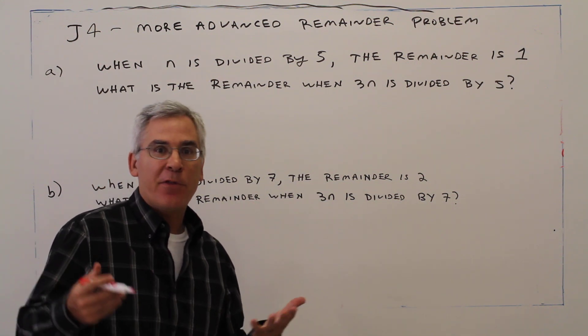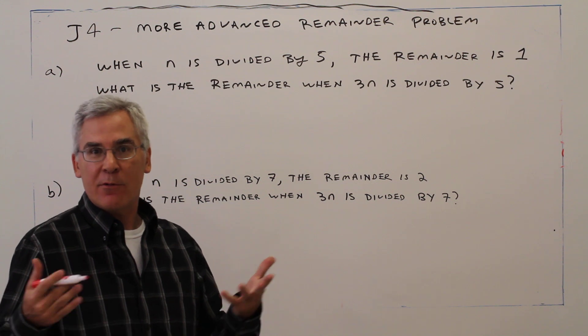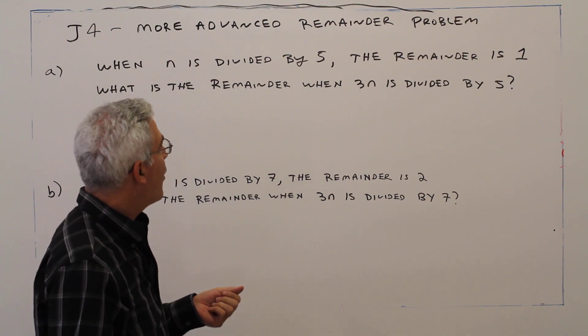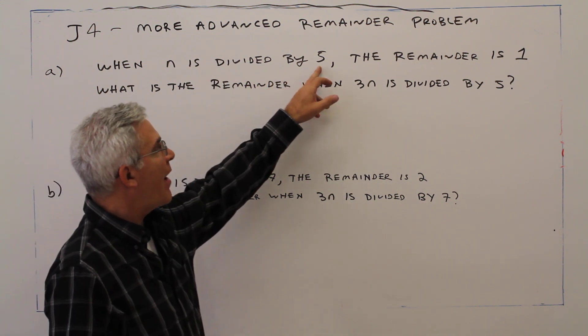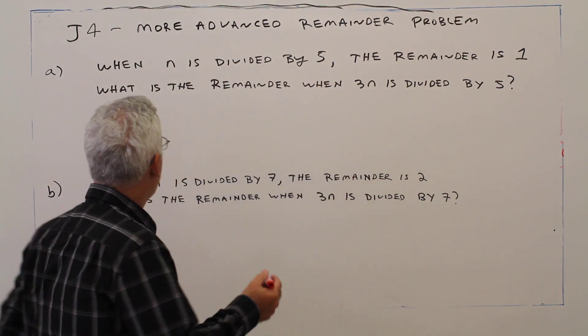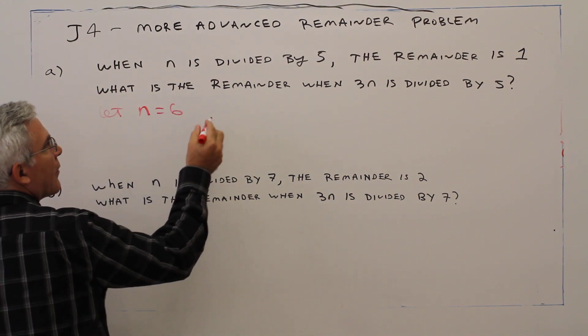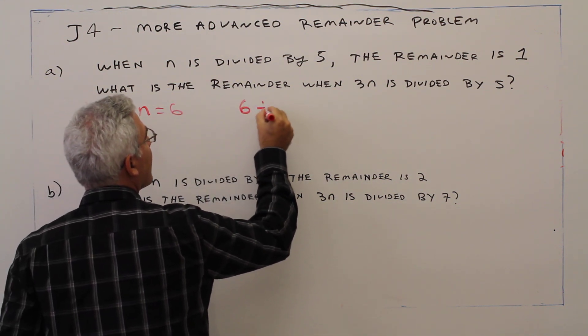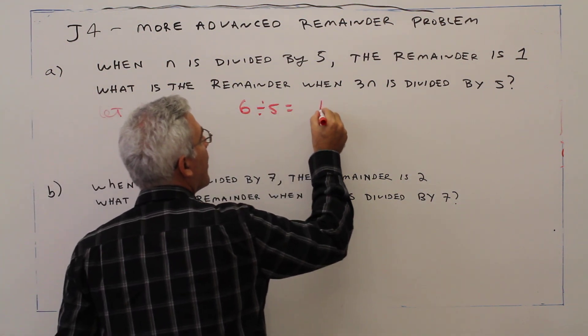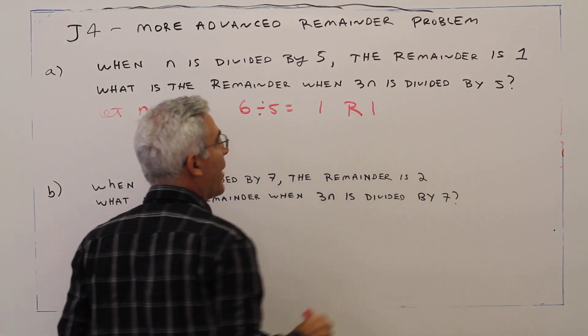So what I usually do for this is just look for some concrete numbers and see what's going on. So I know that 6 divided by 5 has a remainder of 1, so I'll just choose to let n equal 6, and again 6 divided by 5 equals 1, remainder 1.